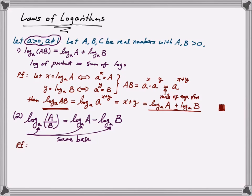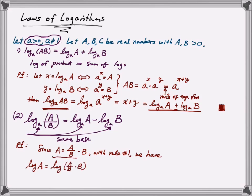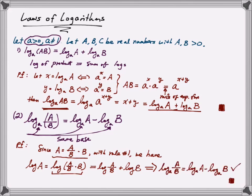I'll prove this quickly. Since we know that capital A can be written as A over B times B, I'm going to use the previous rule in the following deduction. I can write log A as log of A over B times B. If I now use rule number 1 on this expression, I obtain log A over B plus log B. If we subtract log B from both sides, we have our desired expression for log A over B. And that is the end of the proof.